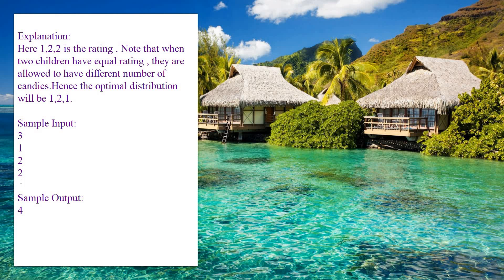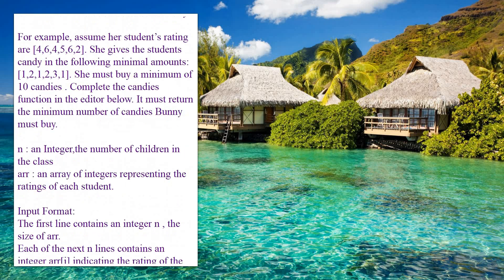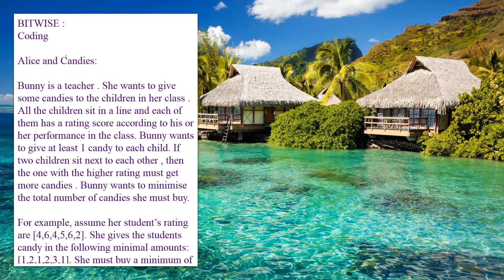So for this sample input — array size 3 with ratings and candy positions — the output displays the minimum number of candies Bunny should buy, which is four. Based on this you are going to write the code in Java. This is the coding question asked in Bitwise — you may get the same or a different one. Thank you for watching, and do subscribe to our channel for more updates.